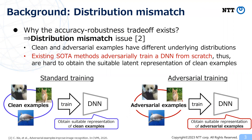A natural question is: why does the accuracy-robustness trade-off exist? One possible answer is the distribution mismatch issue. This issue arises because clean and adversarial examples have different underlying distributions, indicating that training on adversarial or clean examples obtains a suitable latent representation of only one of these types. Therefore, existing AT methods, which typically train a DNN from scratch, obtain a suitable latent representation of only adversarial examples, in contrast with standard training.